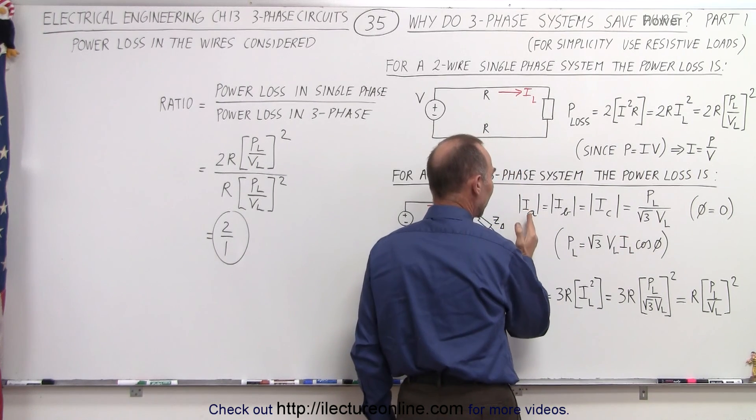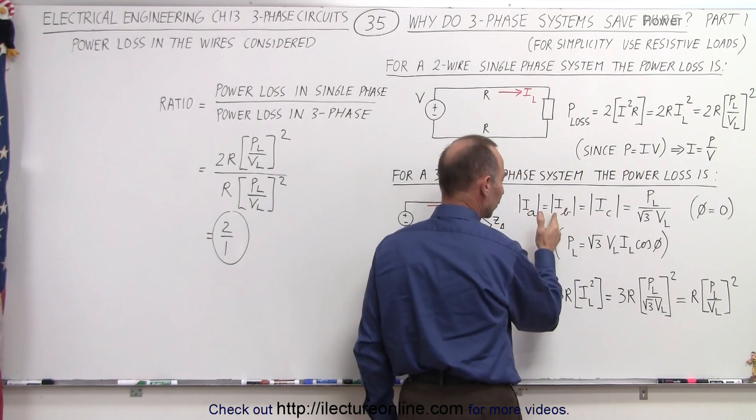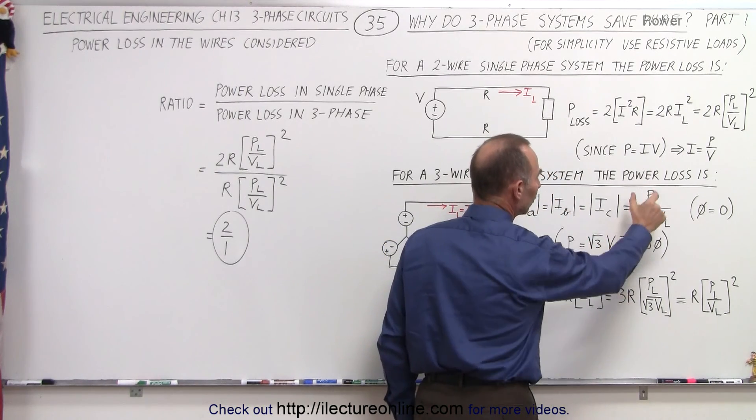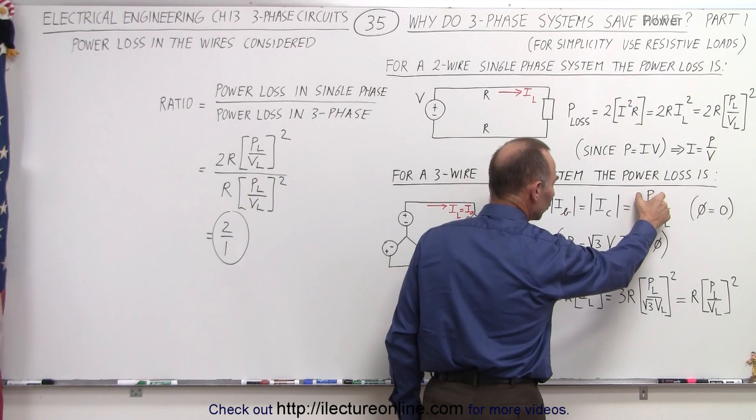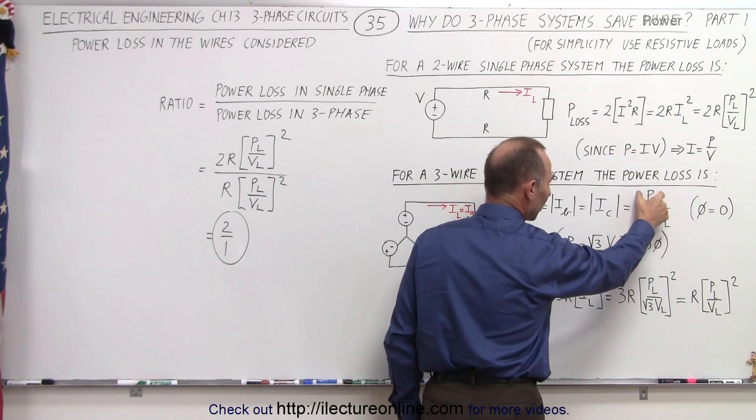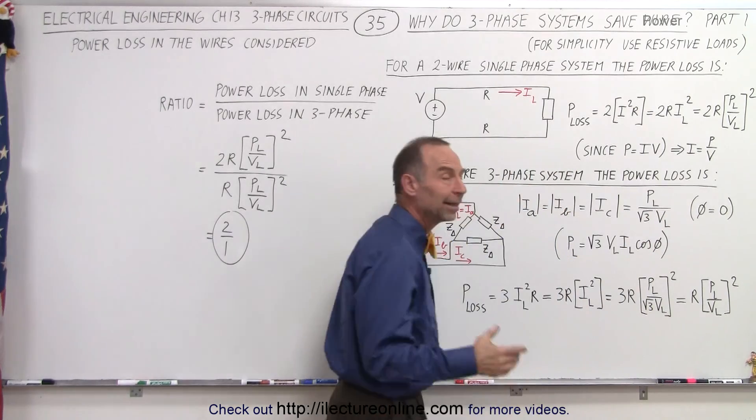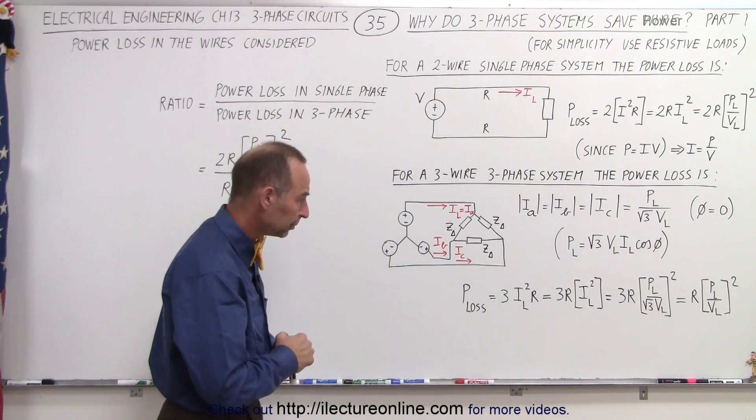In other words, the line current A, the line current B, or the line current C all are equal in magnitude and they're equal to the power per phase divided by the square root of three divided by the line voltage.